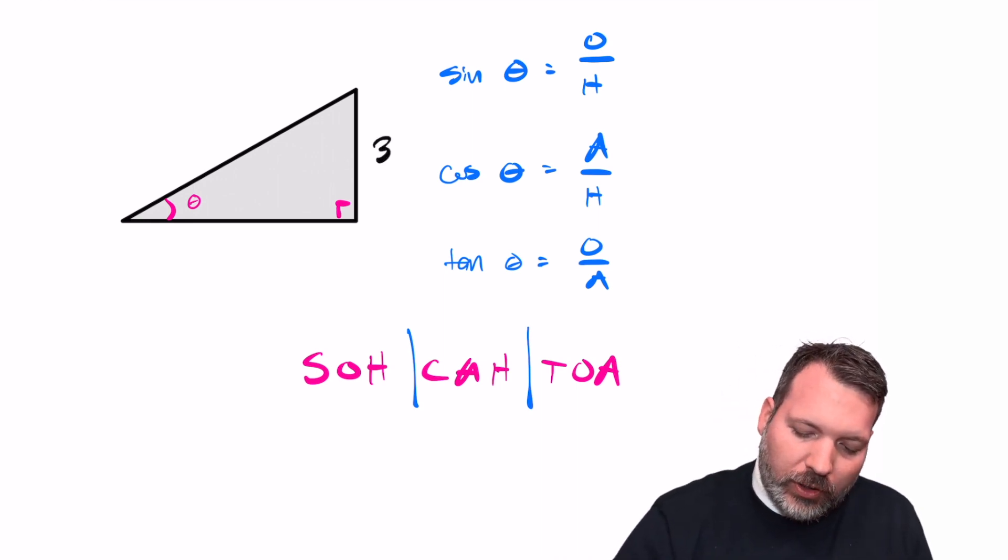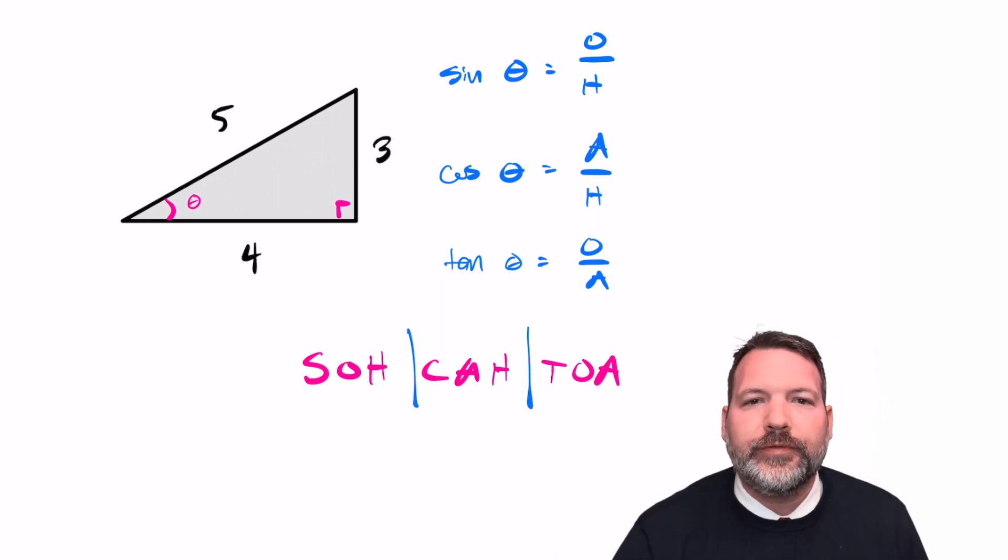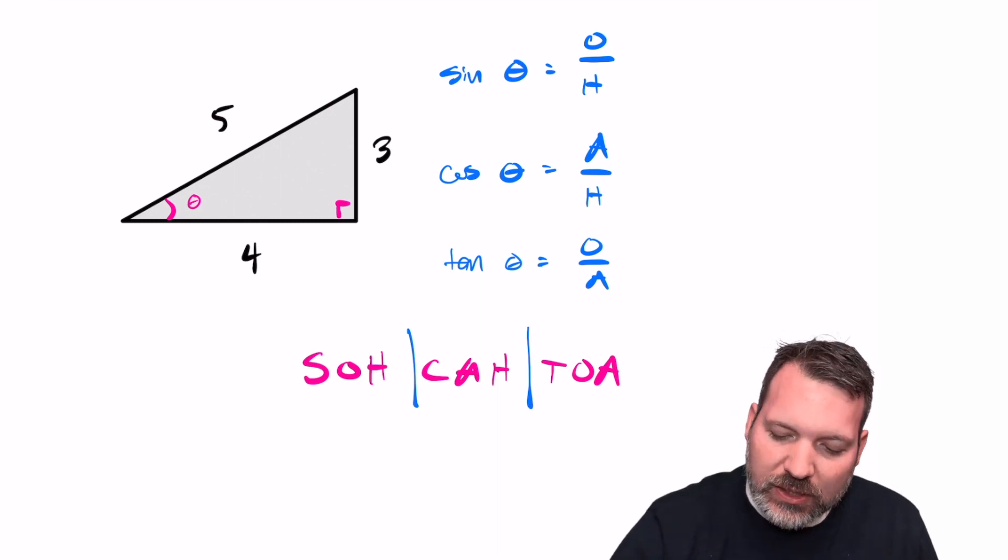And tangent would be opposite over adjacent. That's what the whole SOHCAHTOA thing is supposed to remind us of. Okay, so far so good. So if we're looking at something like our 3, 4, 5 right triangle, these different trigonometric ratios—sine, cosine, tangent—don't know why they have funny names, they're just different ratios of these side lengths.